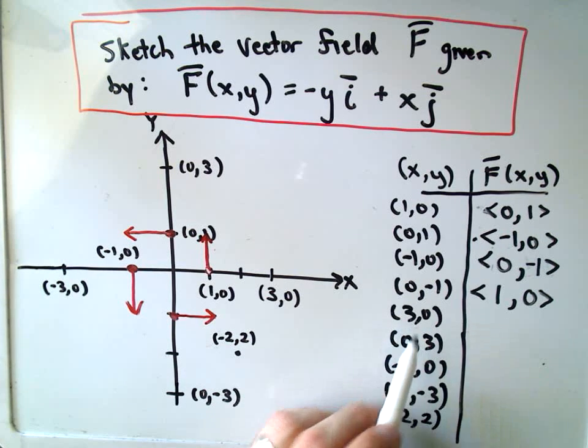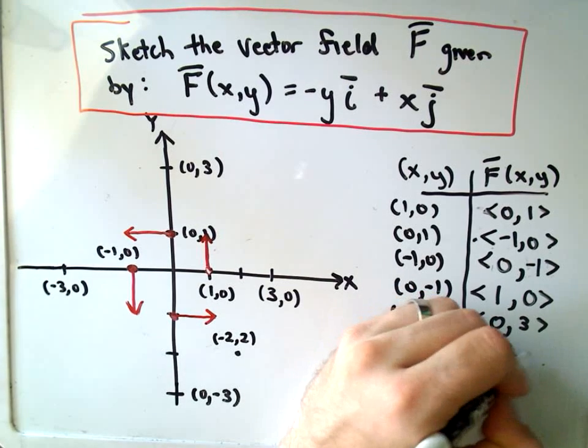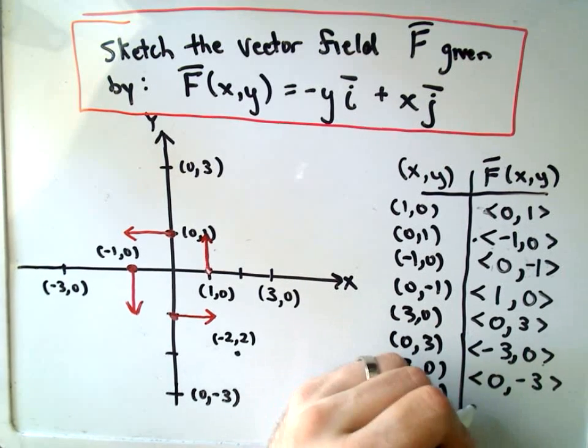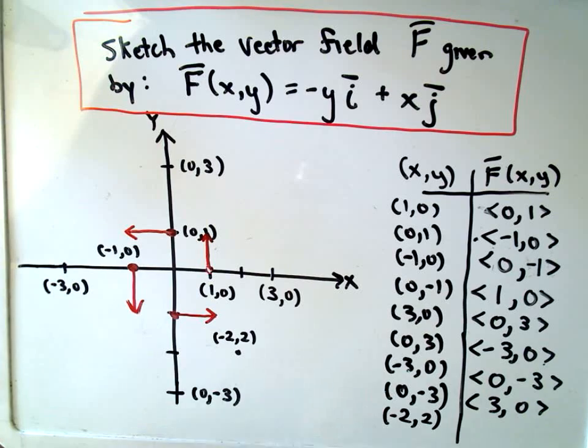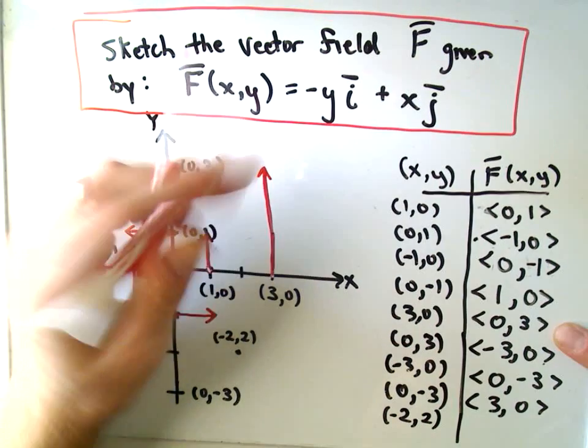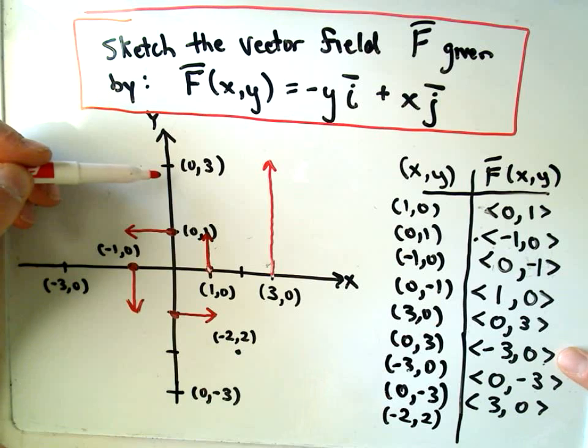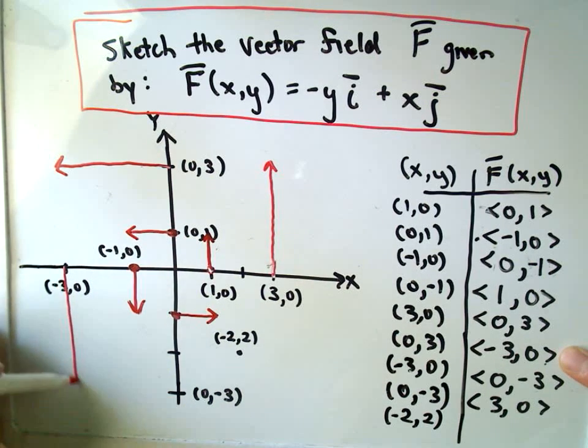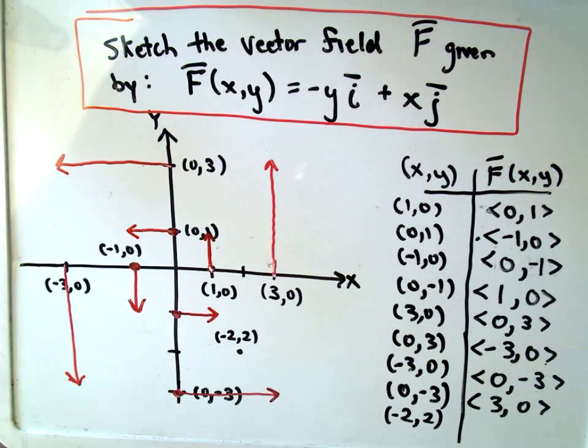I think you can kind of go back and check. If you plug in (3,0), we're going to get <0,3>. If we plug in (0,3), we're going to get <-3,0>. If we plug in (-3,0), we're going to get <0,-3>. And if we plug in (0,-3), we're going to get <3,0> as our vectors. So at (3,0), you're going to get a vector that's pointing three units upwards. At the point (0,3), it's pointing three units to the left and no units up or down. Likewise, at (-3,0), it'll be pointing down. And at (0,-3), it'll be pointing to the right three units.